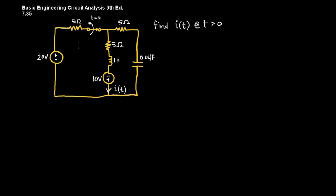Here we have a circuit, and we know that it's a second-order system because it has two energy storage devices. We're further tipped off that this is going to require a differential equation because of the quantum event when the switch is flipped open. Our ultimate solution is going to be to find an equation that describes the current i(t) at all points greater than t equals zero.